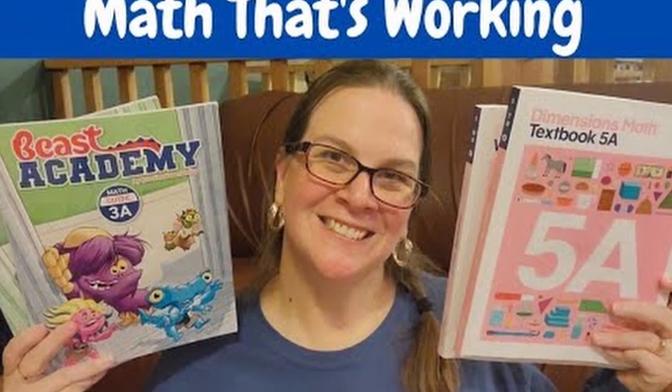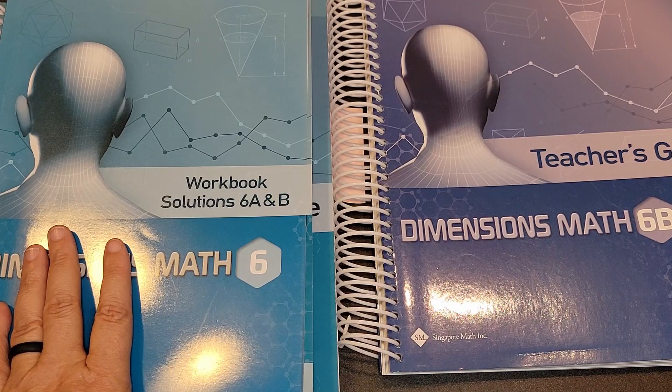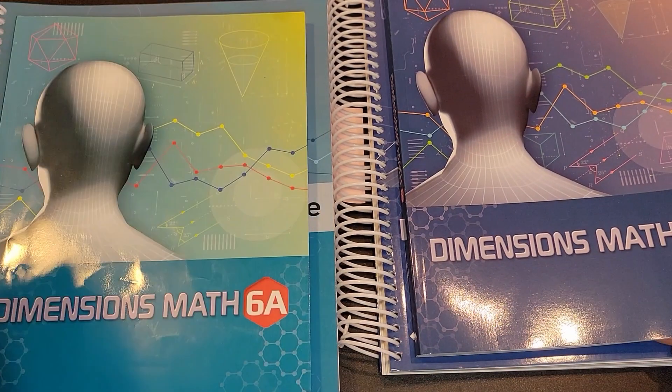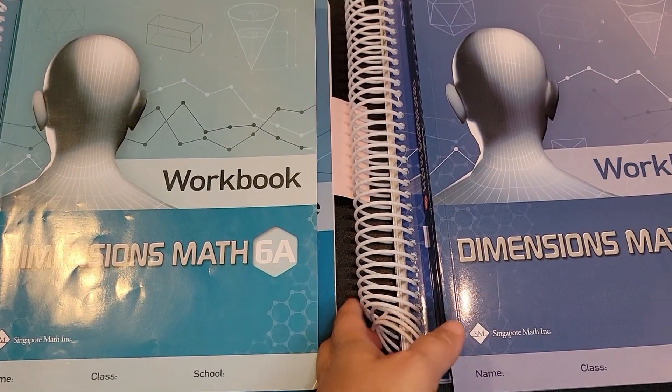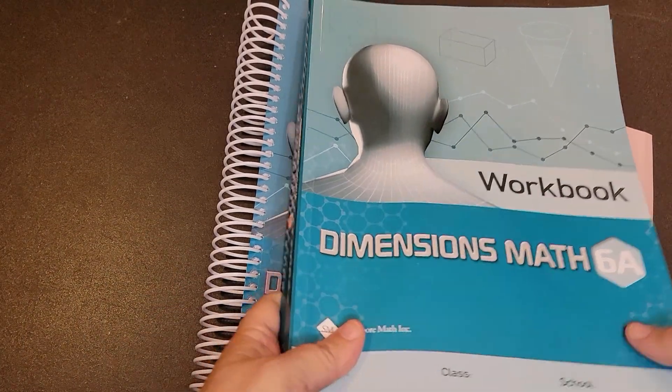As I mentioned there is an A and a B for the year. So you'll have the A and the B teacher's guide, the A and the B textbook, and then the A and the B workbook. Let's get started with a flip through of the materials for A.